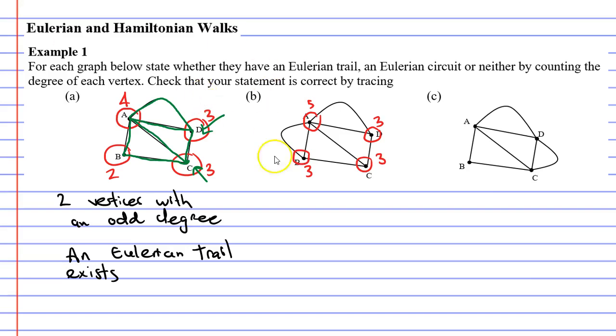So what we learn from this one is that there is neither an Eulerian trail nor an Eulerian circuit, because for an Eulerian trail we need only two vertices with an odd degree, and for an Eulerian circuit you need all of them to be an even degree. I'm not going to bother tracing over this because I know that it is impossible to trace over every edge once without repeating any.